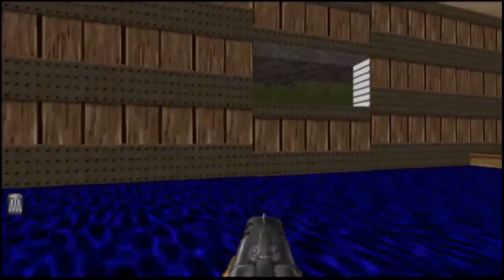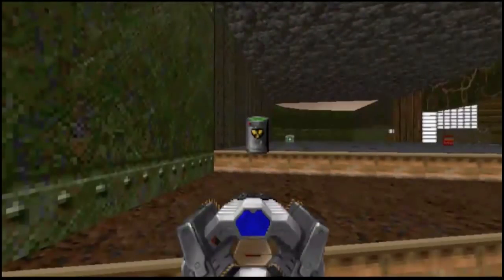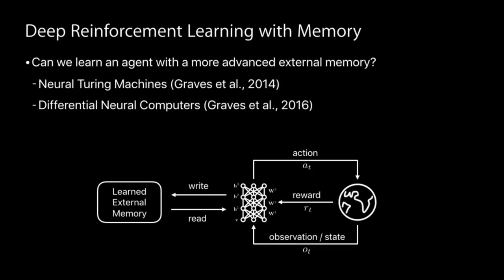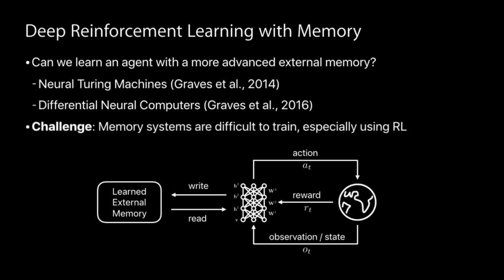The problem with a lot of these techniques is that these models are reactive — given an input, you take an action. The question is, can we learn agents with a more advanced external memory, so that we can remember what happened in the past to act optimally in the future? There's been wonderful work from Alex Graves and colleagues at DeepMind on neural Turing machines and differentiable neural computers, designing these external memory modules. One of the big challenges is it's very difficult to learn these systems, especially using reinforcement learning objectives.